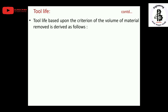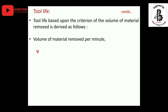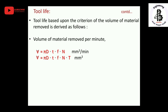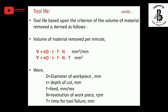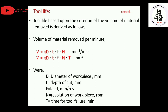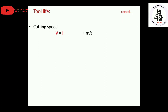Tool life based on the criteria of volume of material removed is derived as follows. The volume of material removed per minute is π·D·t·f·N (mm³ per minute), and the total volume equals π·D·t·f·N·T, where T is time. Here D is the diameter of the workpiece in mm, small t is the depth of cut, f is the feed in mm per revolution, N is the revolution of the workpiece in rpm, and capital T is the time to tool failure in minutes.